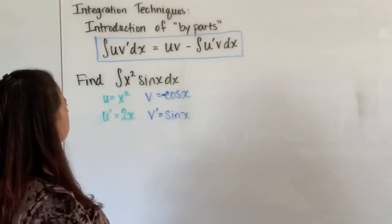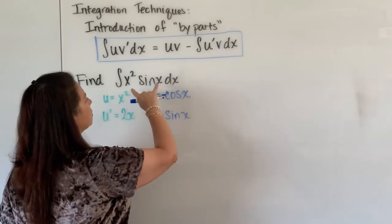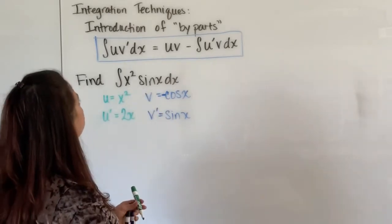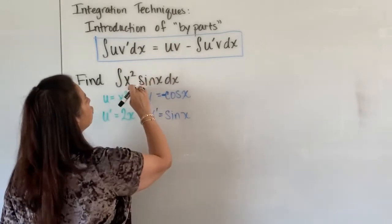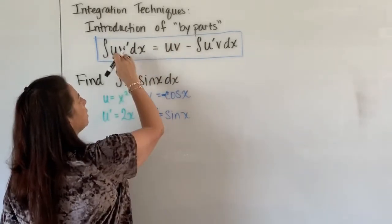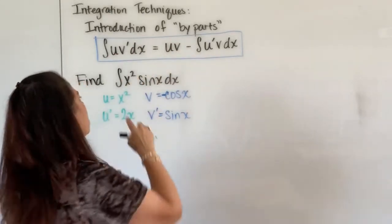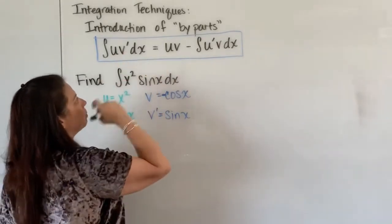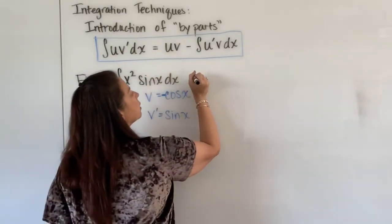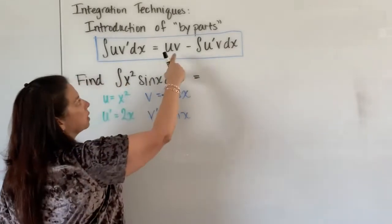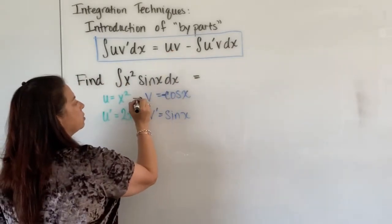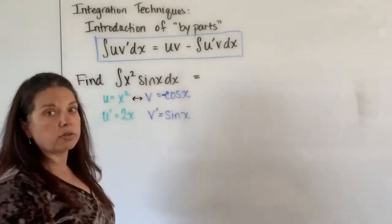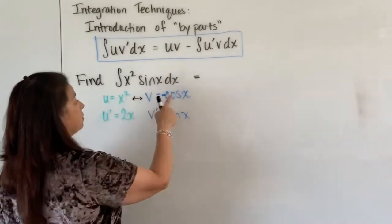Once I have all the pieces here I need to go back to my original problem and put in place all of the rest of the stuff. The initial problem is set up much like the initial formula is set up x squared is the u sine x is the v prime so we can continue on here with the rest of the formula.